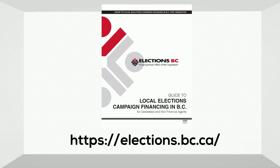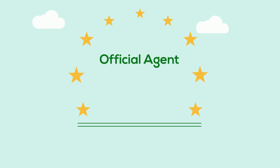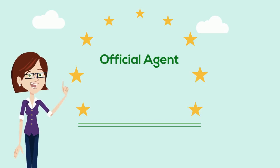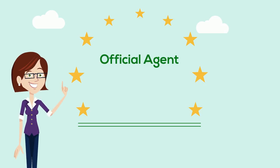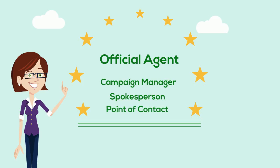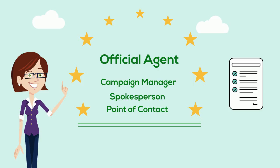Go to Elections BC's website for information about the financial agent's roles and responsibilities. Candidates may appoint an official agent to represent them during the election process. The official agent can act as the campaign manager, spokesperson, or be the point of contact for people helping with the candidate's election campaign. Appointments must be made in writing and given to the chief election officer.